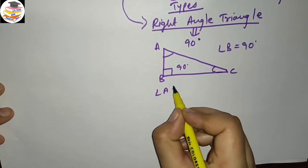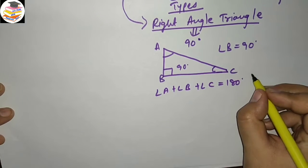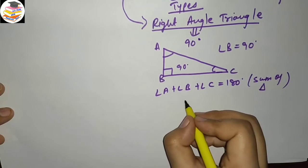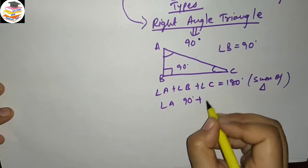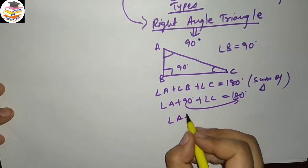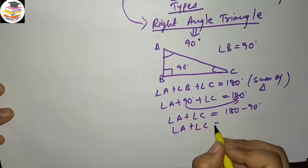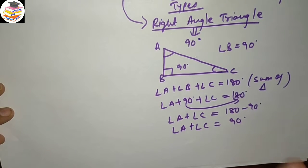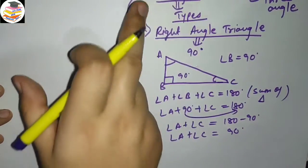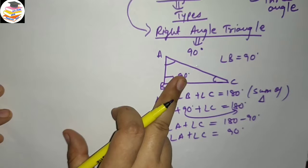Angle A plus angle B plus angle C is equal to 180 degrees, because that is the angle sum property of a triangle. Now, since angle B is 90 degrees, angle A plus angle C equals 180 minus 90, which is 90 degrees. So the sum of the other two angles in a right angle triangle is always 90 degrees.